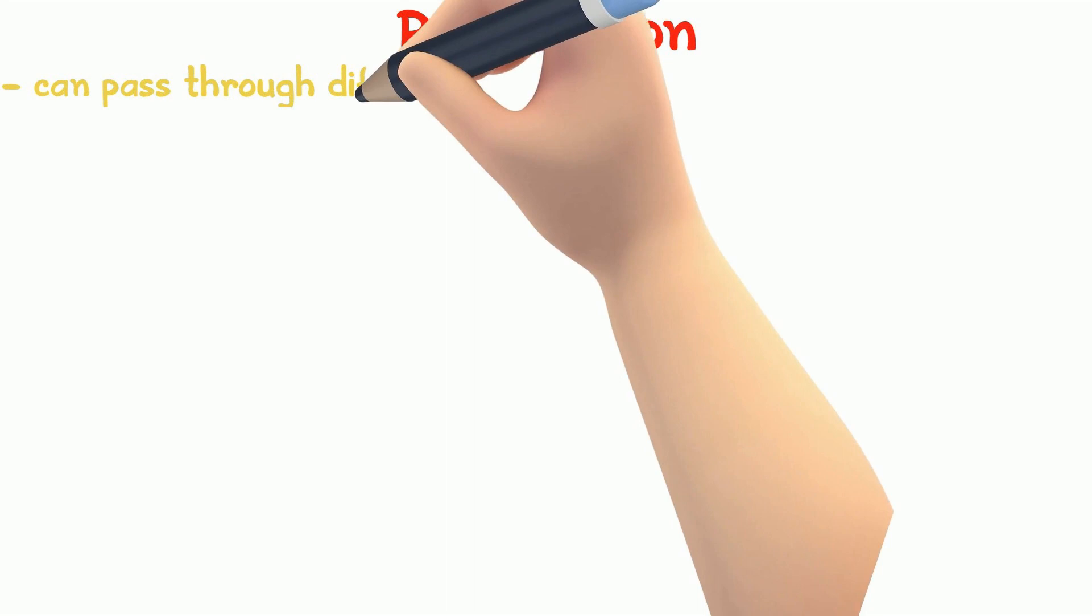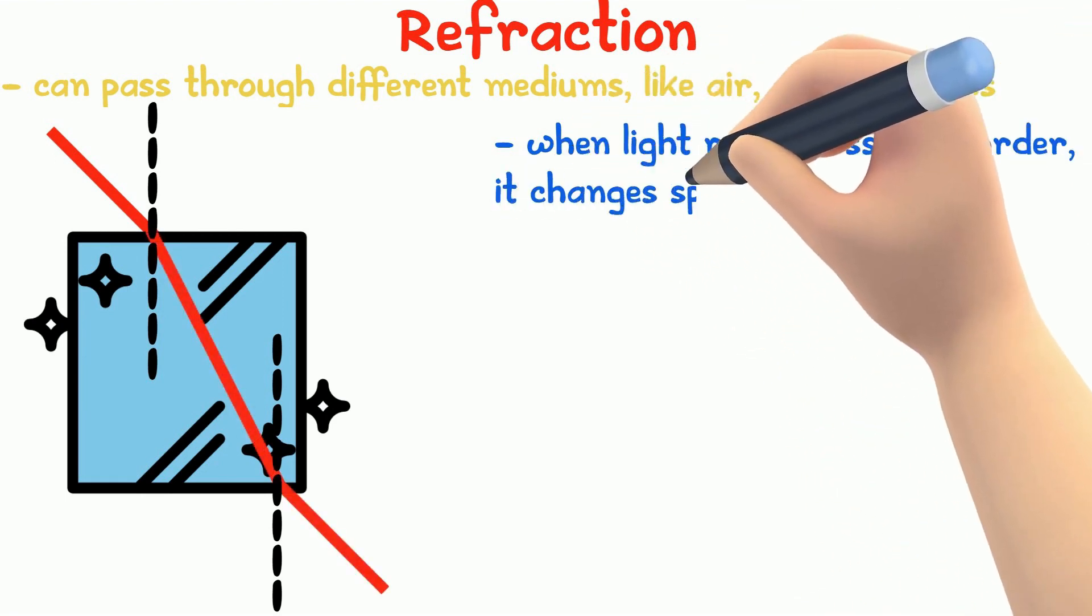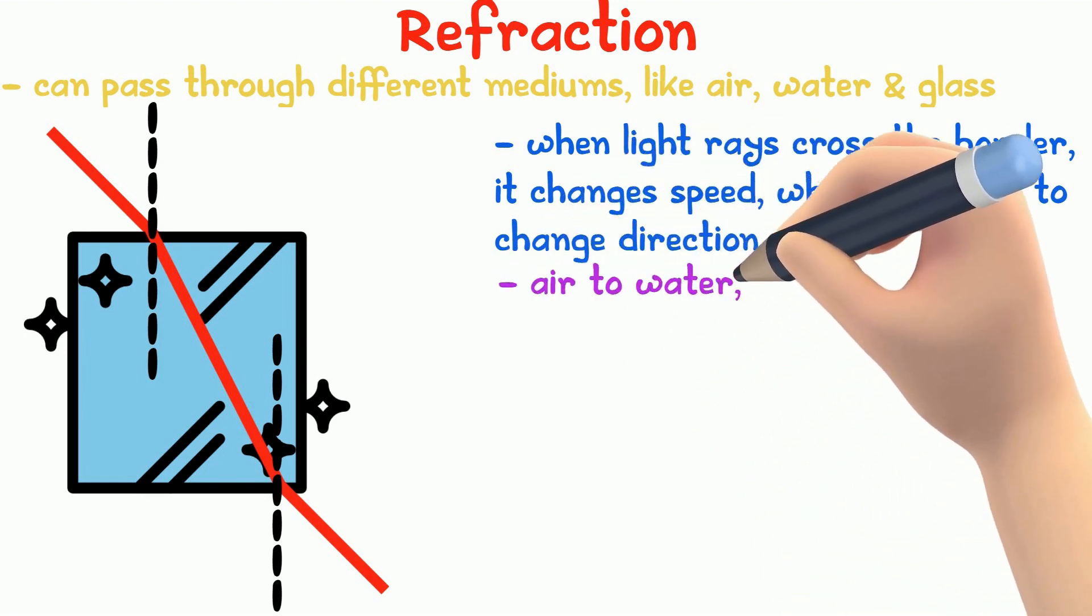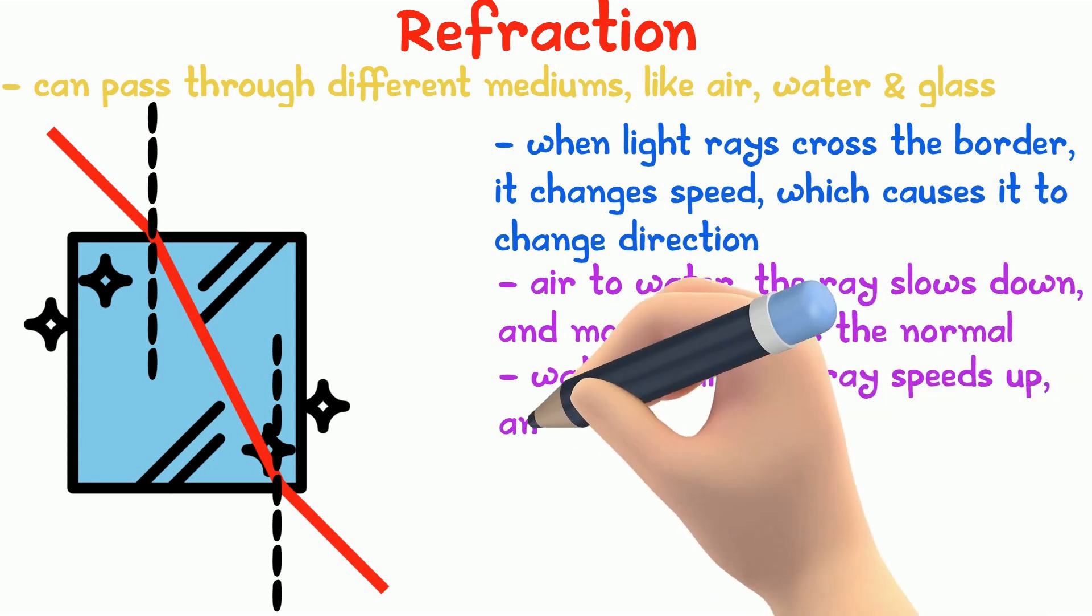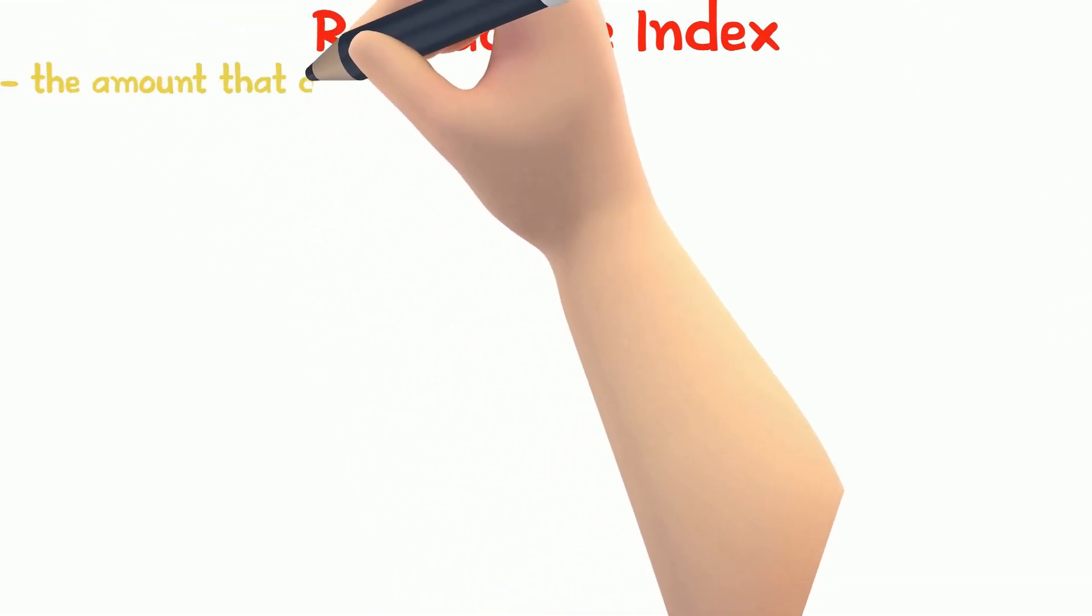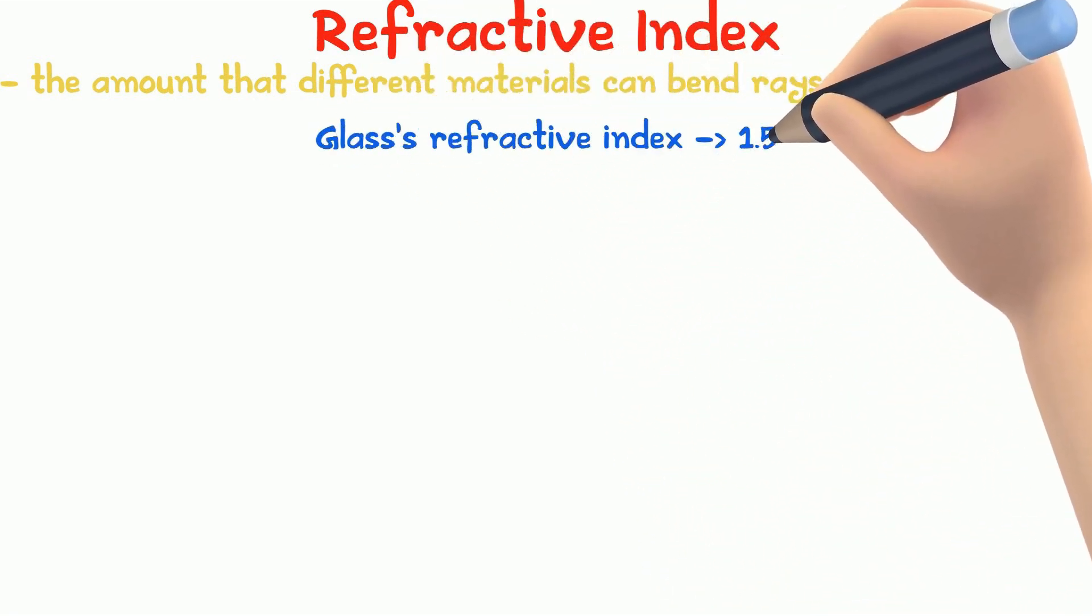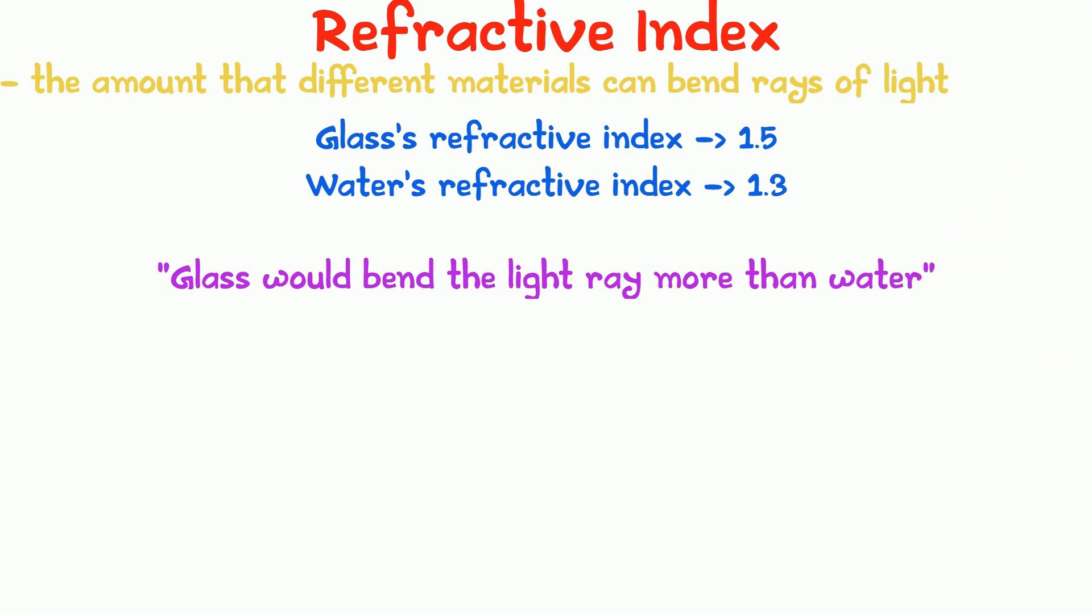Light rays can travel through different media, like air, water and glass. When light rays cross the border between two mediums, it changes speed, which causes a change in the light rays direction. This change of direction is called refraction. When a ray travels from the air into water, it slows down and moves towards the normal. And when the ray travels from water, it speeds up and moves away from the normal. Refractive index is the amount that different materials can bend rays of light. Glass index is about 1.5. Water's index is roughly 1.3. This means that glass would bend the light ray more than water. Refractive index can be calculated using the equation sin i over sin r, where i is the angle of incidence and r is the angle of reflection.